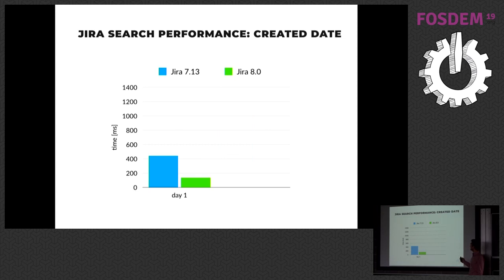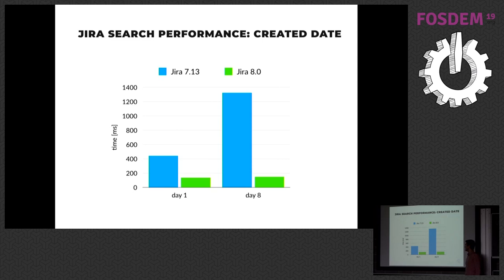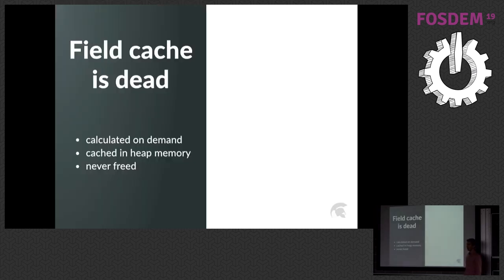If you search by created date, JIRA 8 is three times faster because we now index dates as numbers rather than as text, and doing range queries on numbers is faster than doing range queries on strings. And again, there was degradation in JIRA 7.